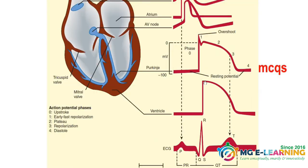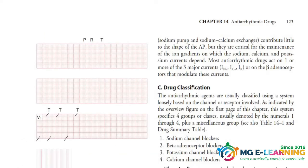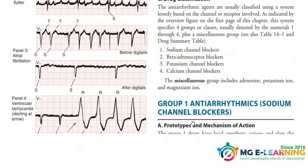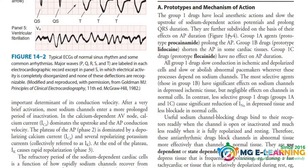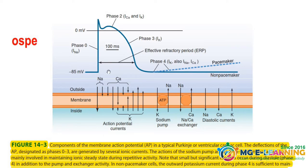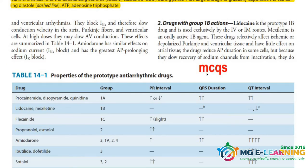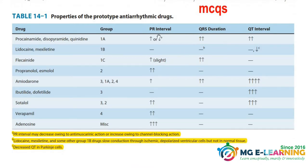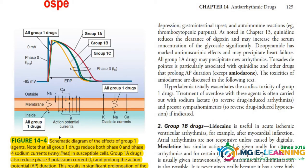Then you have to study Figure 14.1, which is important for MCQs. MCQs and OSPIs can also give you a figure. For SQQs, Group 1 anti-arrhythmic drugs — the sodium channel blockers — are important; you need to understand their mechanism. Table 14.1 is important for MCQs, covering PR interval, QRS, and QT interval — many MCQs have been given from this. Figure 14.4 is also important for OSPI and understanding.